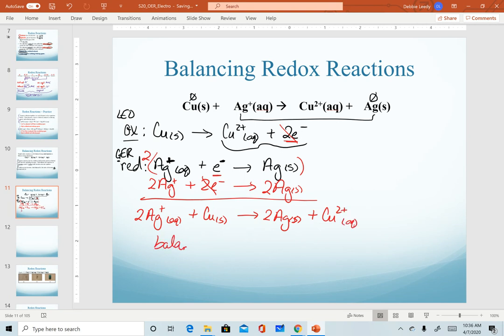Recognize that when we balance, we are balancing both atoms. I have the coefficient of 2 in front of both silver atoms to balance those, and we are balancing charges. Notice that on the left hand side, I have a total of 2 plus. On the right hand side, when I add everything up, I also have a total of a 2 plus.